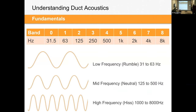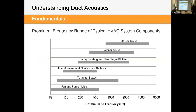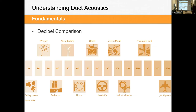Different HVAC components produce different frequency ranges. Fans and pumps are typically low frequency — a vibrational, bass-like rumble. Diffusers and dampers produce higher frequency noise — more of a hiss from high-velocity air. Understanding this helps diagnose noise problems: low-frequency rumble suggests a fan or pump; high-frequency hiss points to a diffuser or damper.